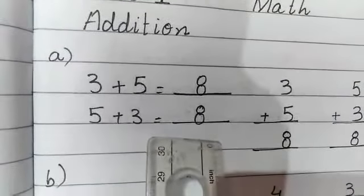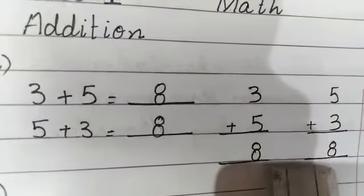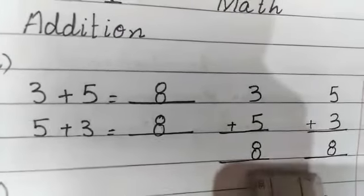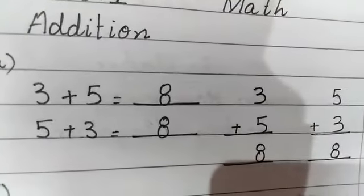Answer is 8. Now, horizontally, we added it. 3 in your mind and 5 fingers out. Answer is 8. 5 in your mind, 3 fingers out. Answer is 8. Okay?